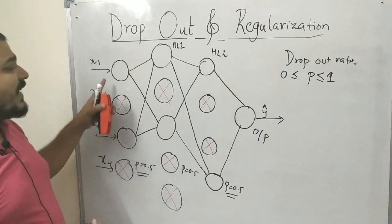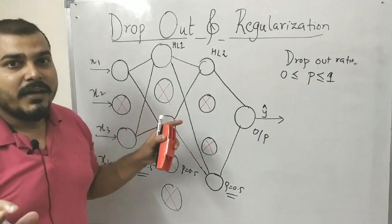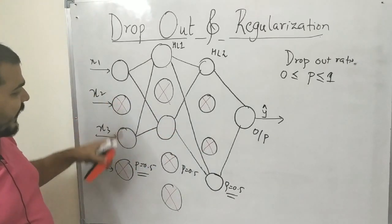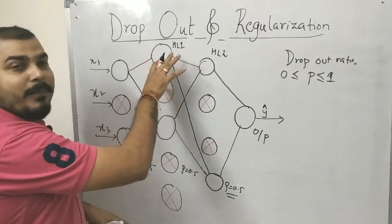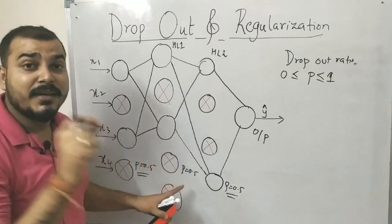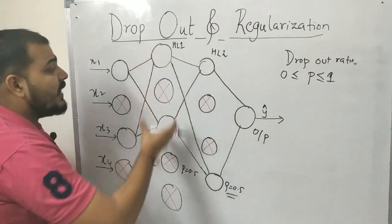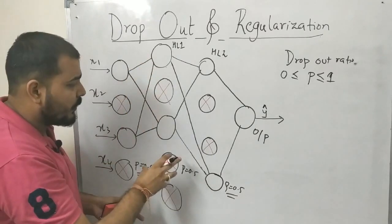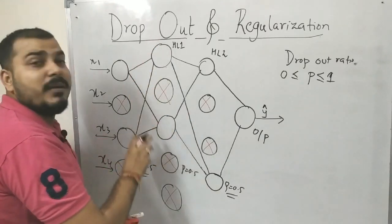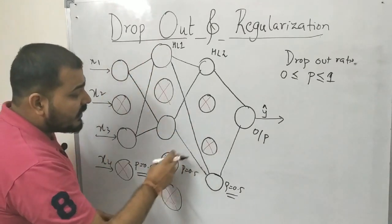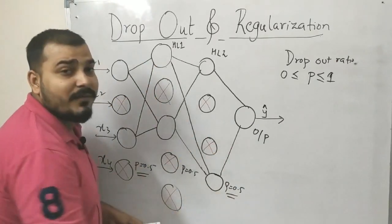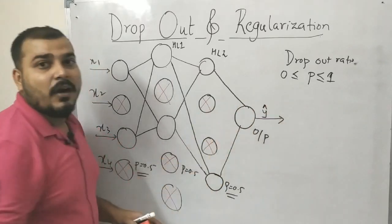During forward and backward propagation, when P = 0.5 is selected, it will randomly deactivate some features and activate others. For example, the second and fourth node may be deactivated, and the input gets passed through the active neurons. In each subsequent layer, based on the P value, some neurons are deactivated randomly, and processing continues until we get the output.